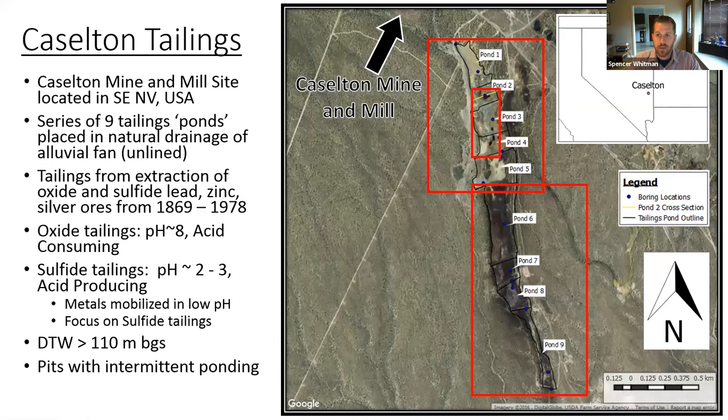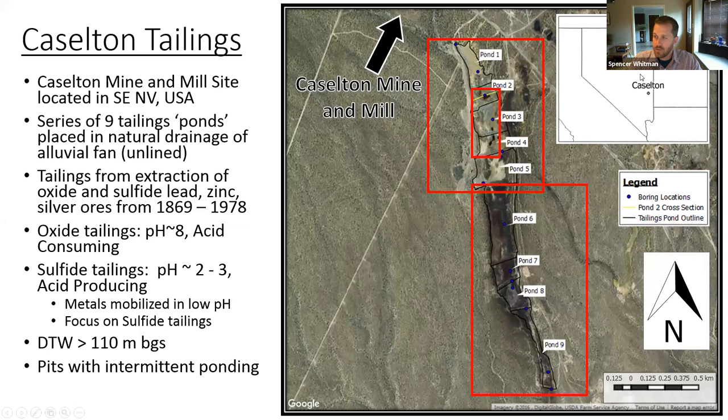The Castleton tailings are located in southeastern Nevada and consist of nine tailings ponds placed in a natural drainage of an alluvial fan. They're unlined, unlike modern mining operations, before any mining reclamation laws were in place. The tailings resulted from extraction of oxide and sulfide lead, zinc, and silver ores from 1869 to around 1978.